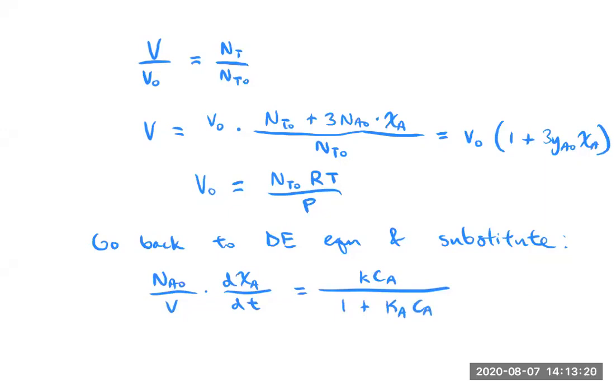And now we want to substitute in for volume. So I'll use a red color for this. So V equals NTO times RT over P times one plus three mole fraction of A initially times conversion. You can see that this is just what's coming from this times that. This is how we're substituting in for volume here.